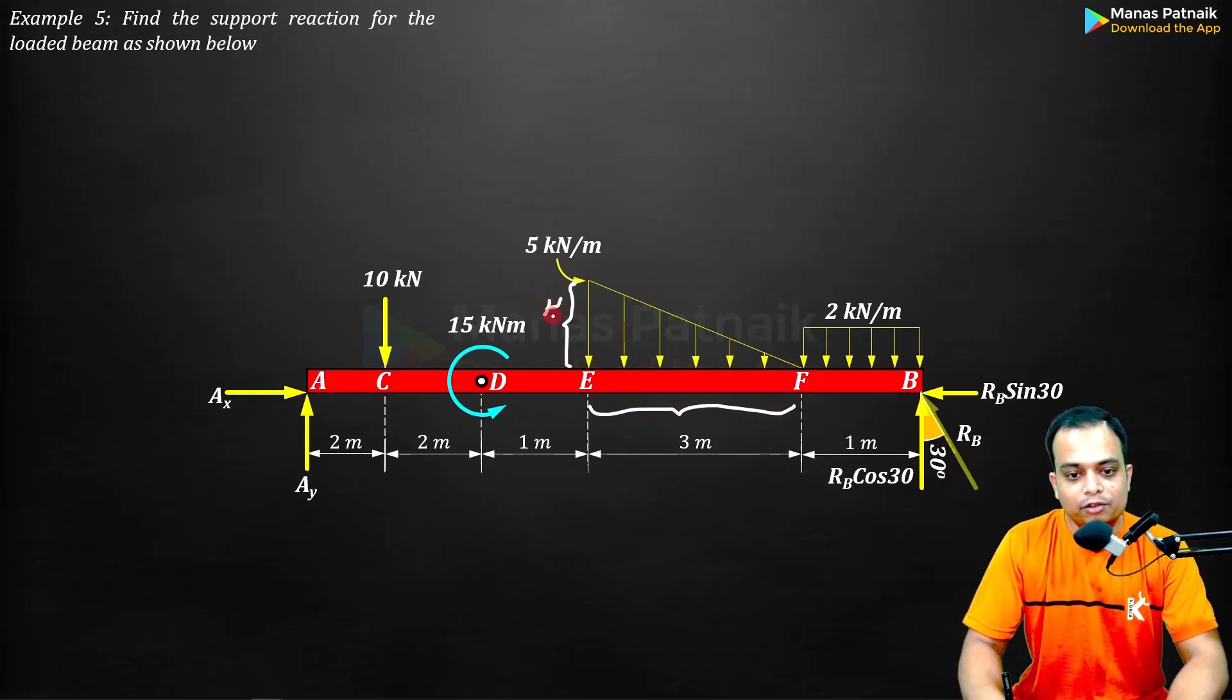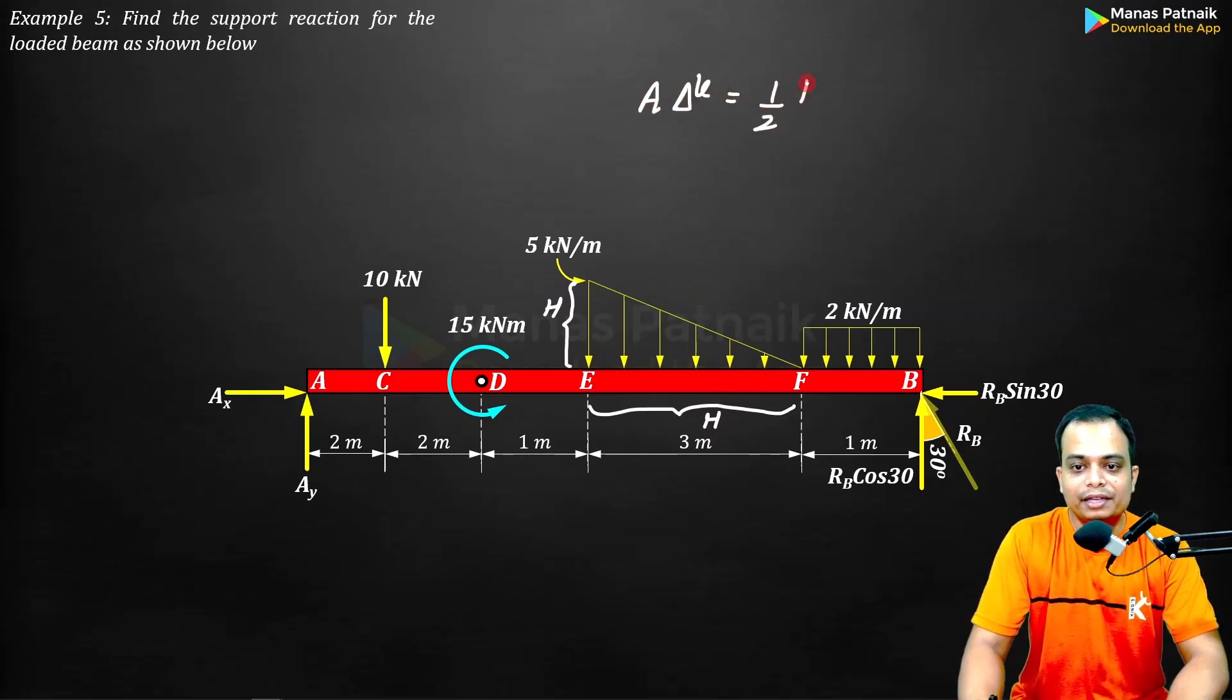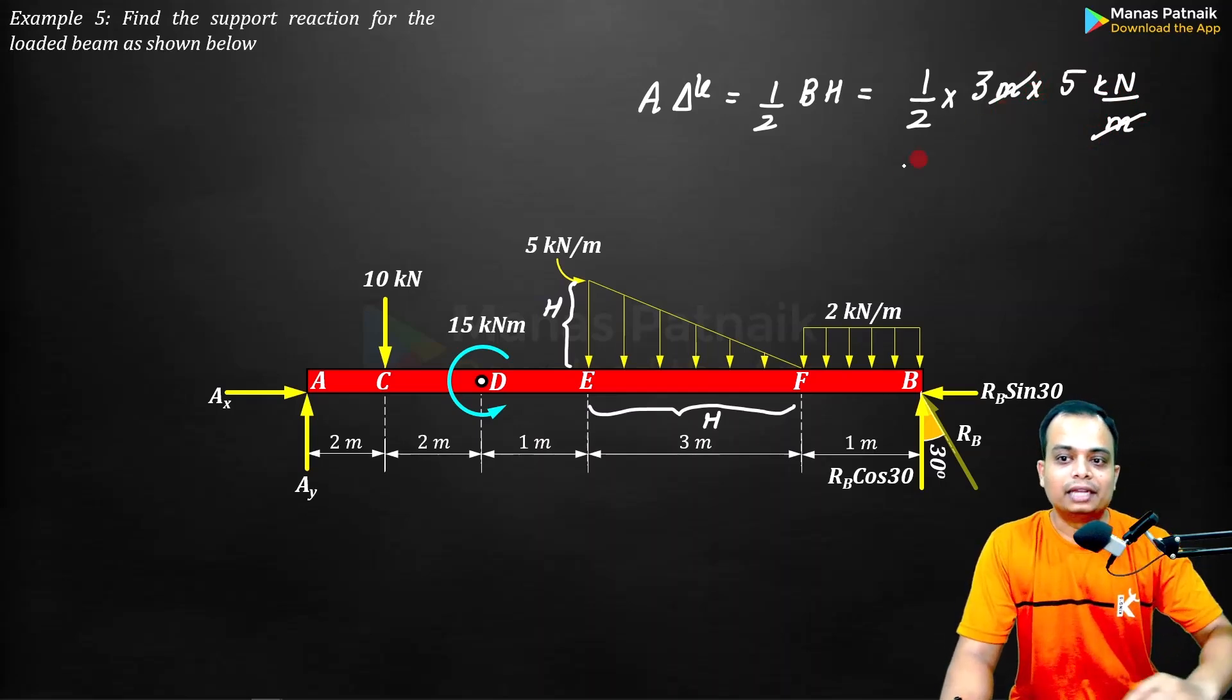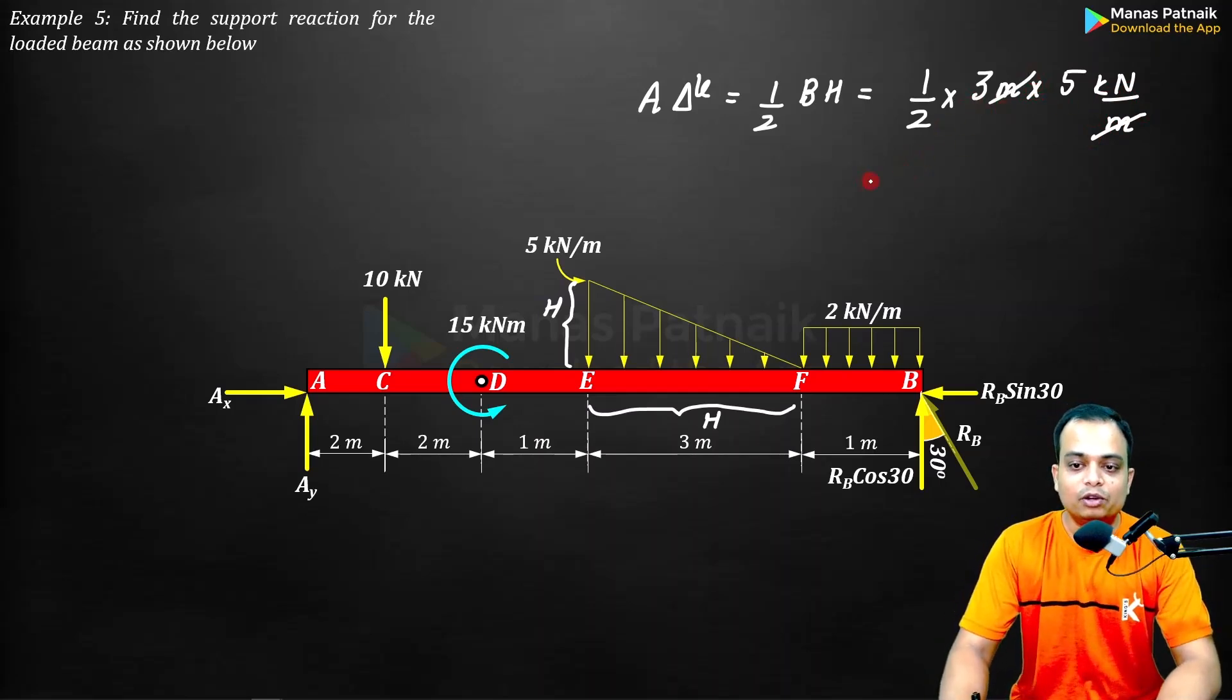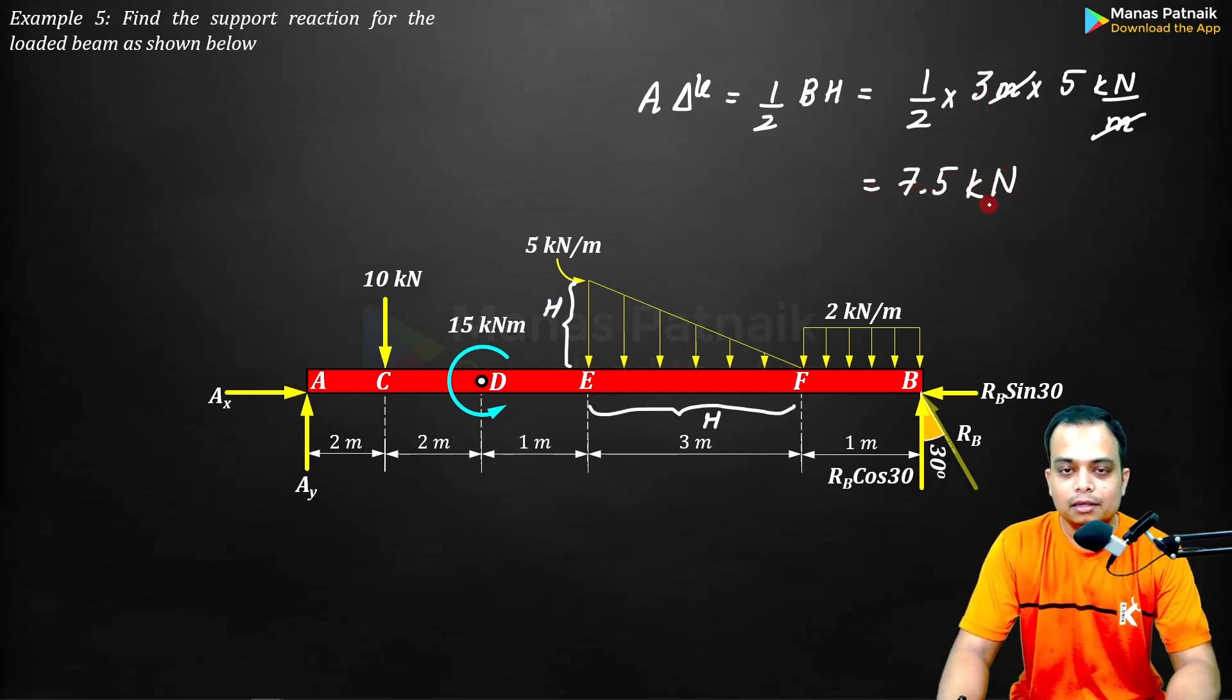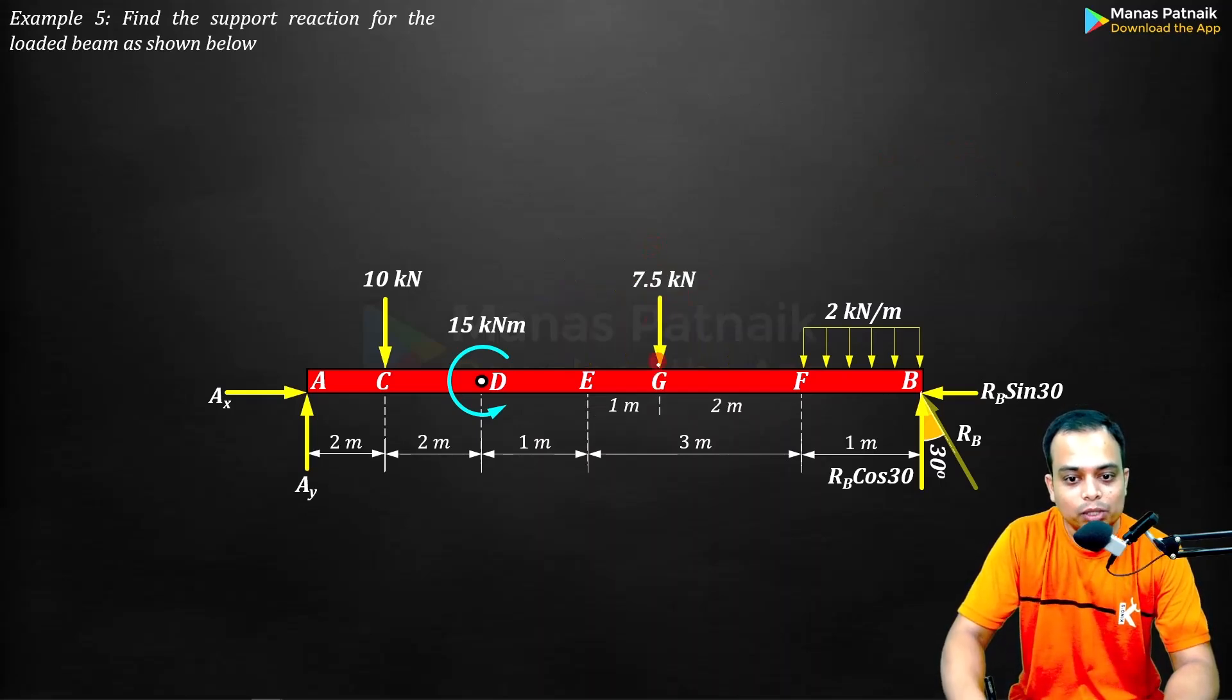Let me demonstrate this to you. This is the height of the triangle and that's the base of the triangle. The area of a triangle is given by half of base into height. Half of base, that is three meters, times the height which is five kilonewtons per meter. Meter and meter cancel each other out. Five times three is fifteen, fifteen over two is 7.5. So we can replace this triangularly varying load by a simple point load of magnitude 7.5 kilonewtons.